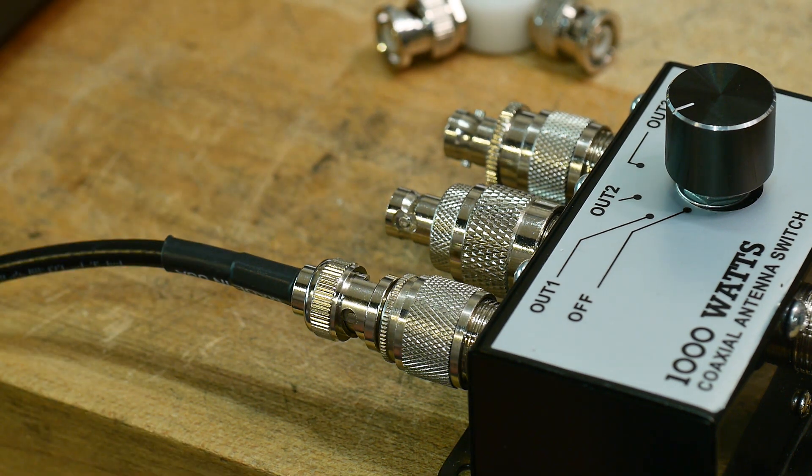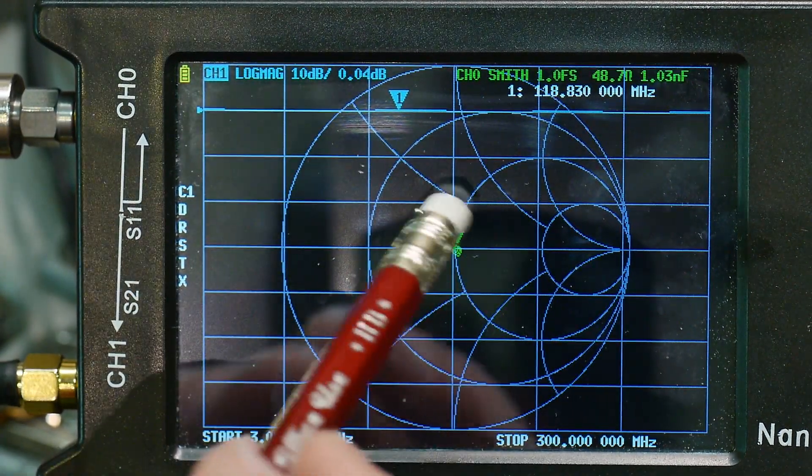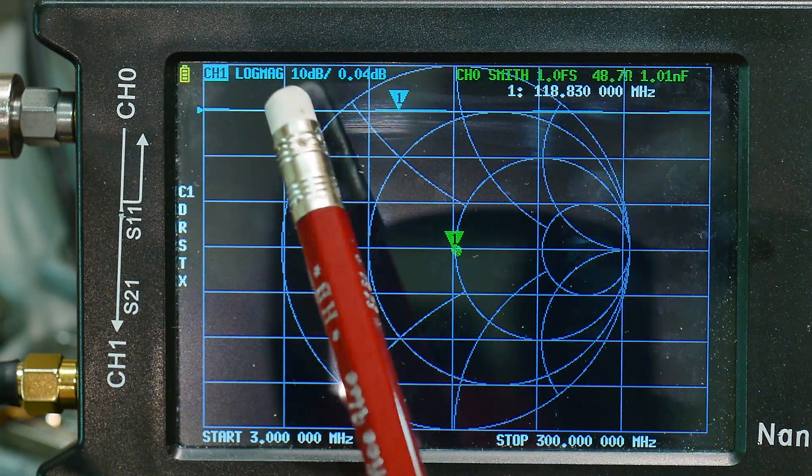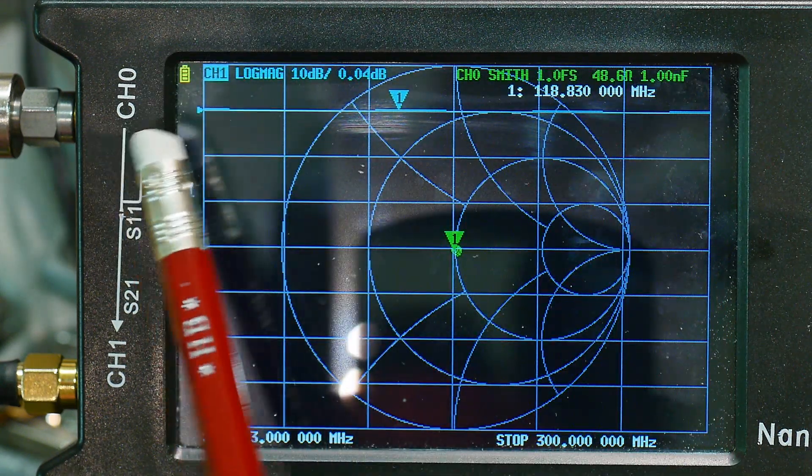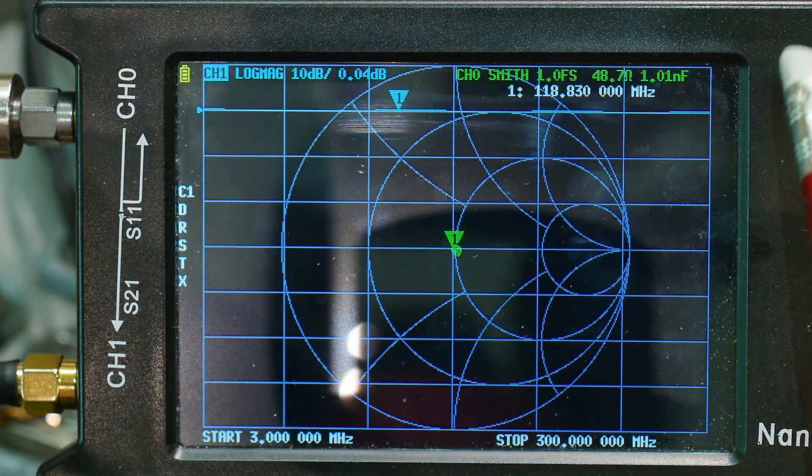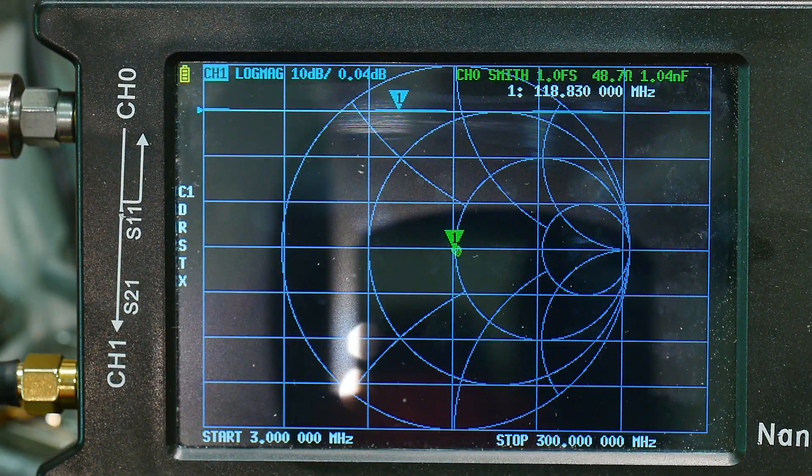All right. So there we go. Nice calibration in the center. And our through calibration is a nice straight line. So I have the blue channel set up for a log mag. So that's S21. So we have a nice straight line. So if there's any loss, it'll be lower.